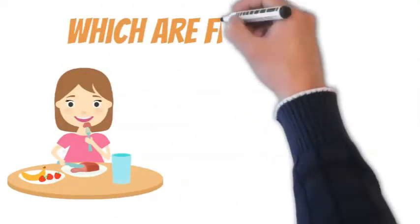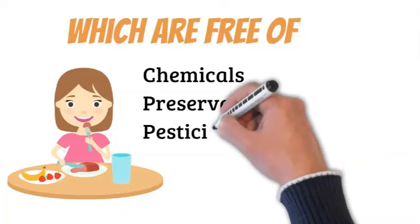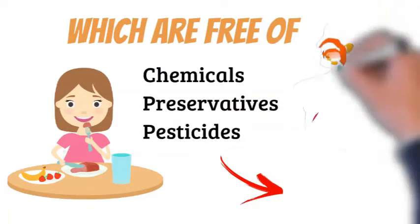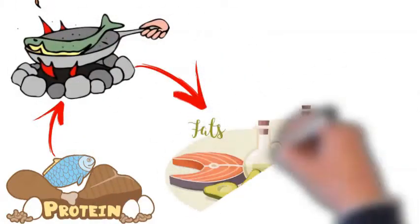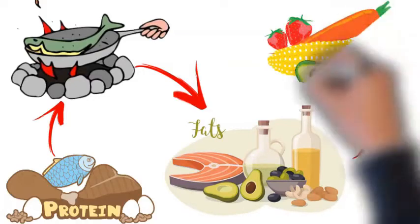Clean meals, which are free of additional chemicals, preservatives, and pesticides, are considerably simpler to digest and help you go asleep sooner. Choose protein from animals raised in a low-stress environment, healthy fats, and a rainbow of organic plant-based foods.